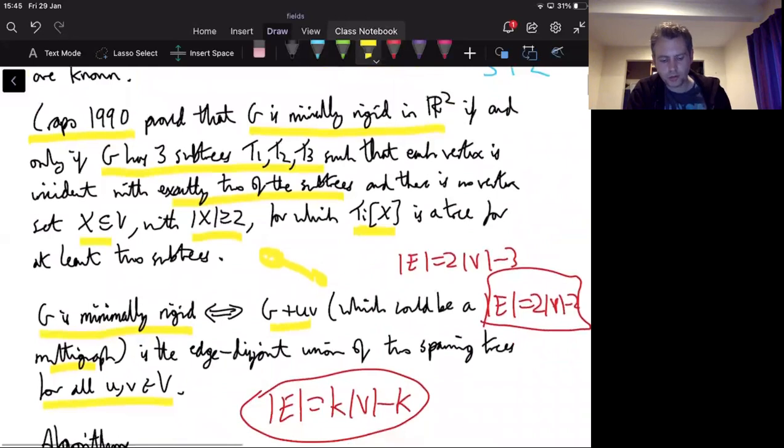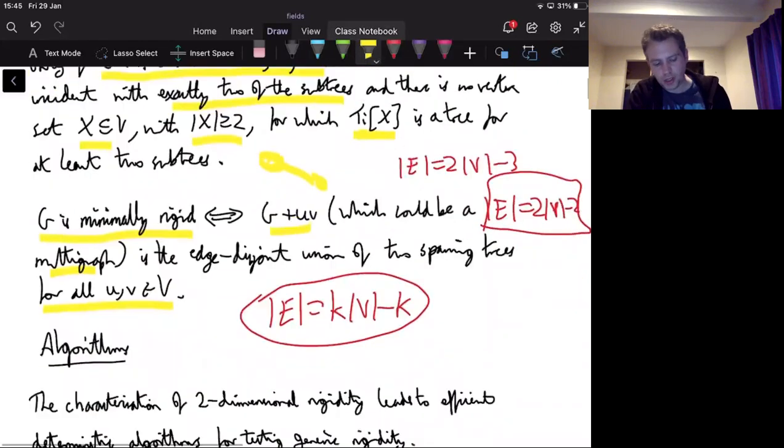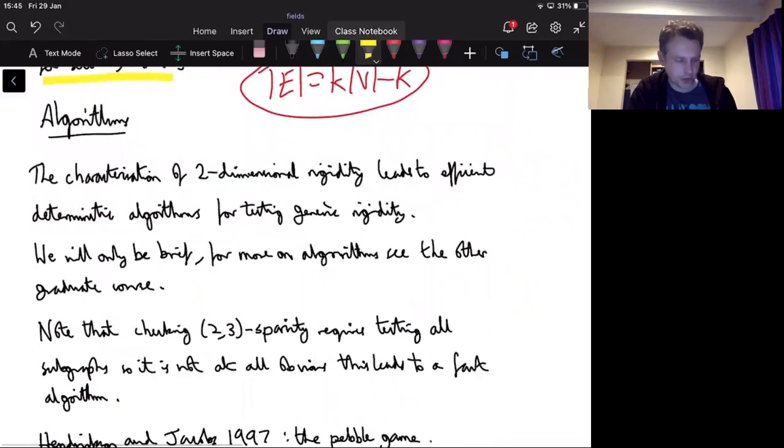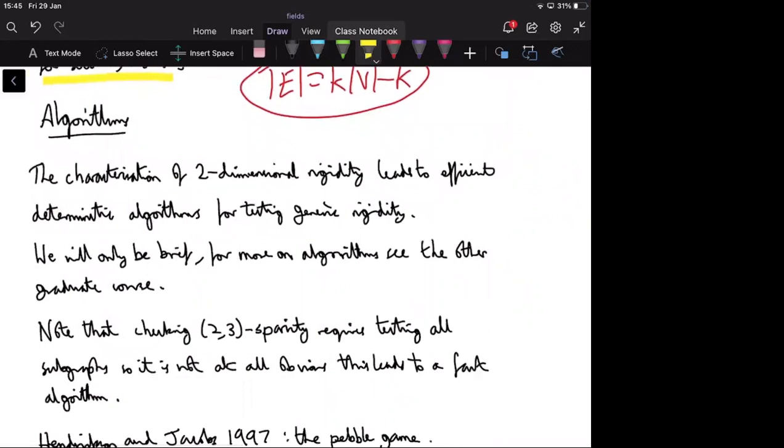So these are just two alternative characterizations that are equivalent to the two-free-tight condition. And given that we know the two-free-tight condition is equivalent, actually proving these could be an exercise, if you like, but I decided not to spend the time on it. And that's probably good since I'm now a bit further behind because of my technology.